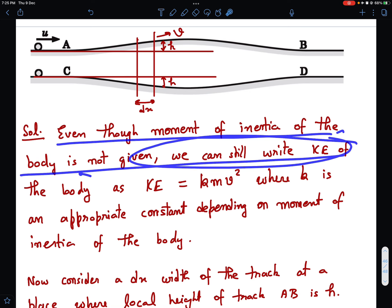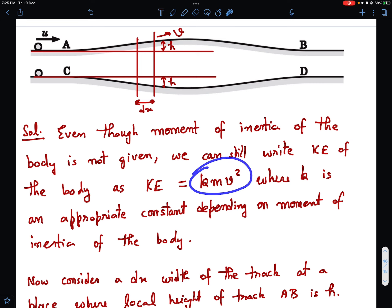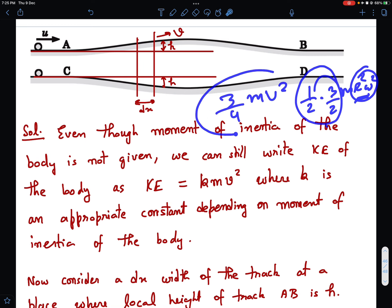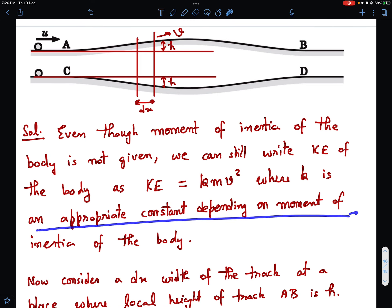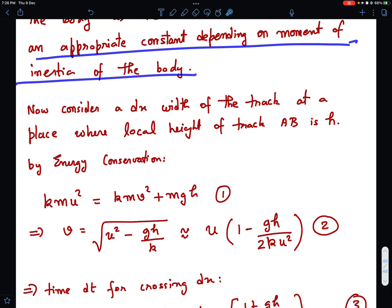Even though the moment of inertia of the body is not given, we can still write the kinetic energy of the body as KE = k·Mv². Where k is some appropriate constant depending on the moment of inertia of the body. For solid cylinder it would be 3/4·Mv². Similarly for hollow cylinder it will be different. So irrespective of what exact section looks like, whether it's hollow or solid or a shell, the kinetic energy is definitely of the form k·Mv². And k is an appropriate constant depending on the moment of inertia of the body.